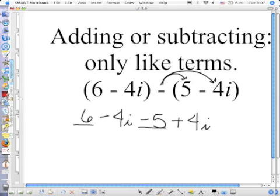Whole number 6 minus 5 gives me 1. And in my i terms, I have negative 4 plus 4, which is 0, which means that I have no more. So the answer is simply 1. The i's went away.